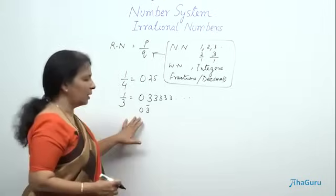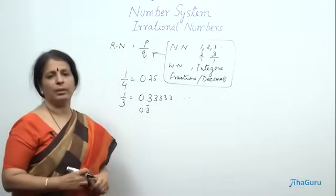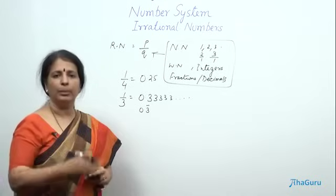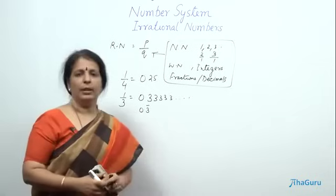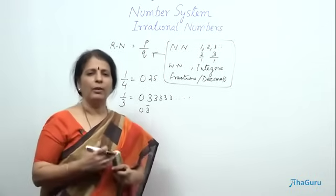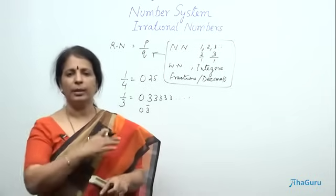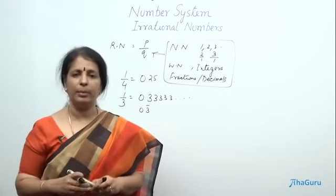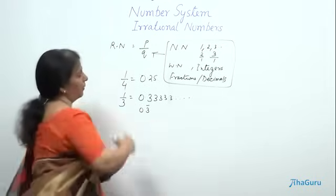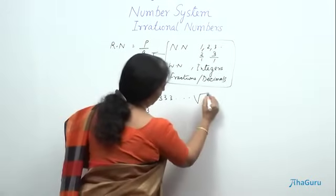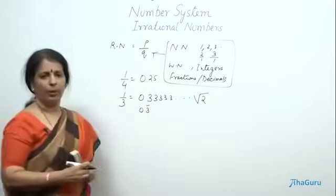All the rational numbers can be put on the number line. We can put where 1 by 4 is, we can also put 1 by 3 on the number line. Apart from these rational numbers, the number line also has some numbers known as irrational numbers. Look at this number, root 2.